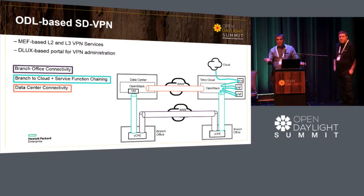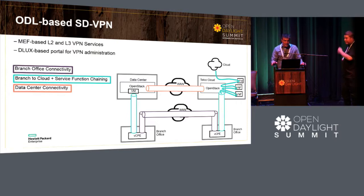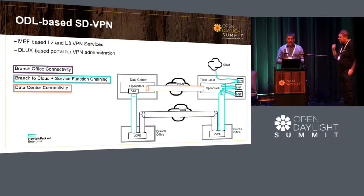ELAN and E3 models — if you're familiar with the MEF models — both are being supported. ELAN enables direct branch-to-branch connectivity.